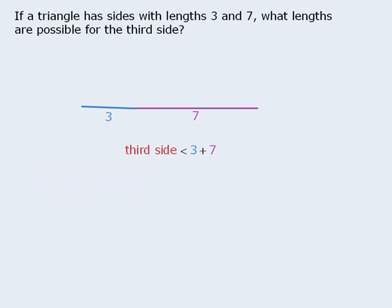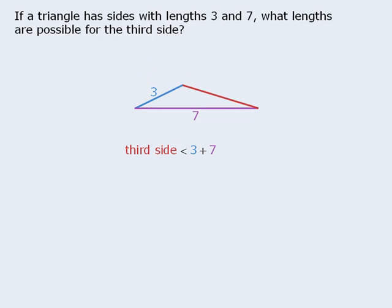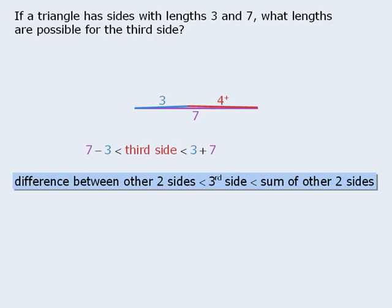Now that we know the maximum length of the third side must be less than 10, what is the minimum length of the third side? To find out, we will create a triangle using our given sides, and notice that when we decrease the angle between the given sides, the third side gets shorter and shorter. So to minimize the length of the third side, we must make this angle as small as possible. When we make the angle 0, we can see that the third side will have length 4. However, since we cannot have a triangle with an angle of 0 degrees, we need to increase the angle ever so slightly, which means the length of the third side will be a little bit greater than 4. Notice that the third side of this triangle must be greater than 7 minus 3 and less than 7 plus 3. We can generalize this result to say that the third side of any triangle will be greater than the difference between the two sides and less than the sum of the two sides.